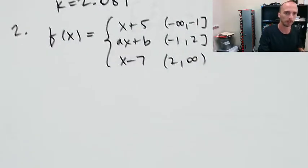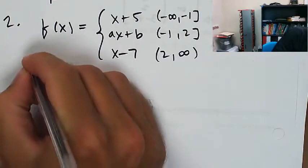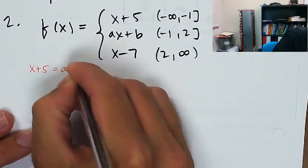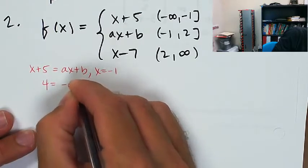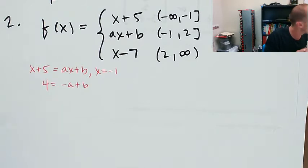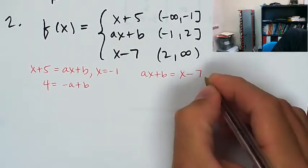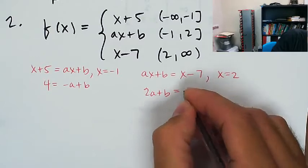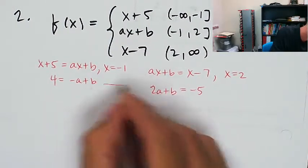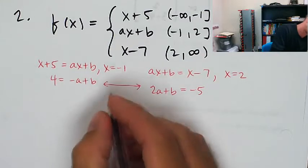I'm going to start there. I've got x plus 5 equaling ax plus b with x equaling negative 1. So that's negative 1 plus 5 is 4, equaling negative a plus b. On the other hand, I've also got ax plus b equaling x minus 7 at the point where x is equal to 2. So that's 2a plus b equals negative 5. So now I'm going to take these two and I'm going to solve this system.